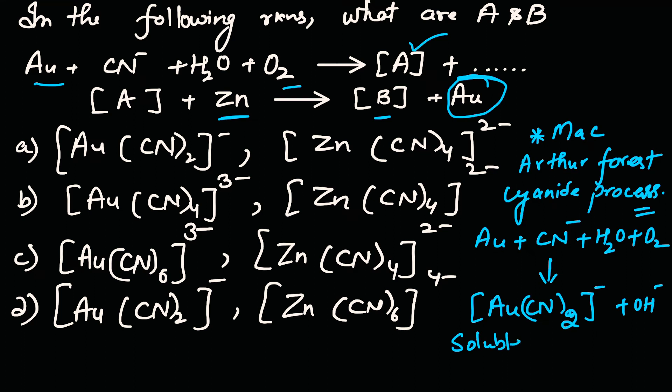The metals are recovered from these complexes by reduction or displacement method using a more electropositive metal. In this case, it is zinc. [Au(CN)2]- reacts with zinc to form [Zn(CN)4]2- plus Au.